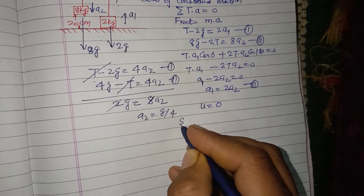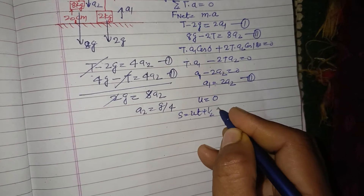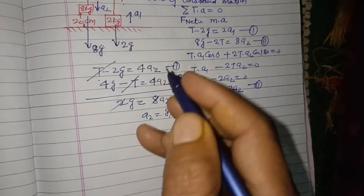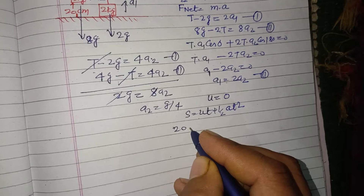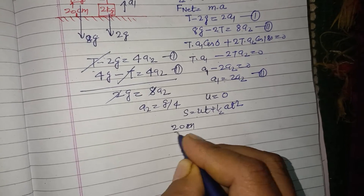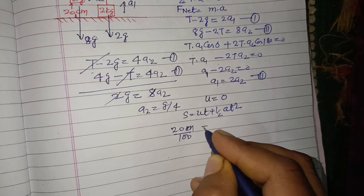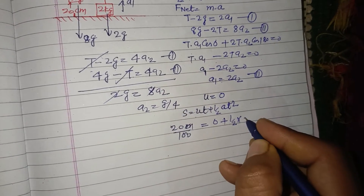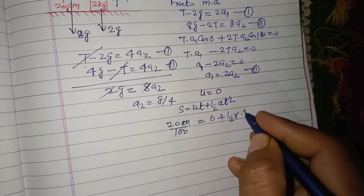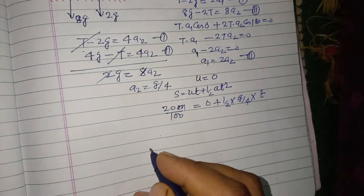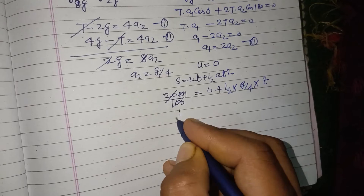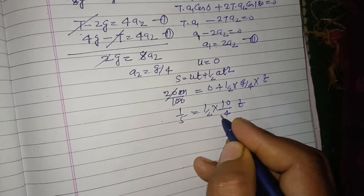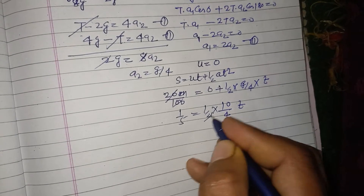The acceleration of the 8 kg block is g/4. Starting from rest (u = 0), using s = ut + ½at²: s = 20 cm = 0.20 m, u = 0, a = g/4 = 10/4. So 0.20 = ½ × (10/4) × t².